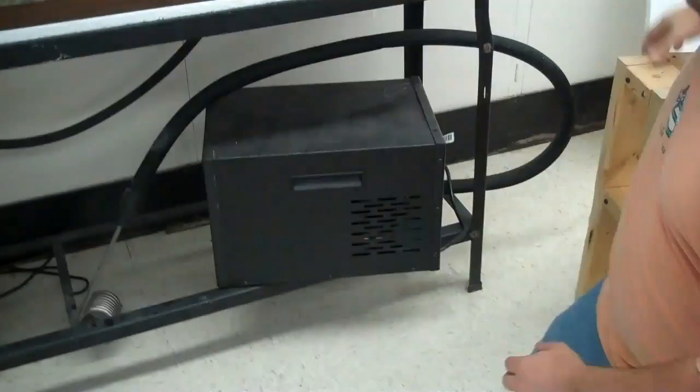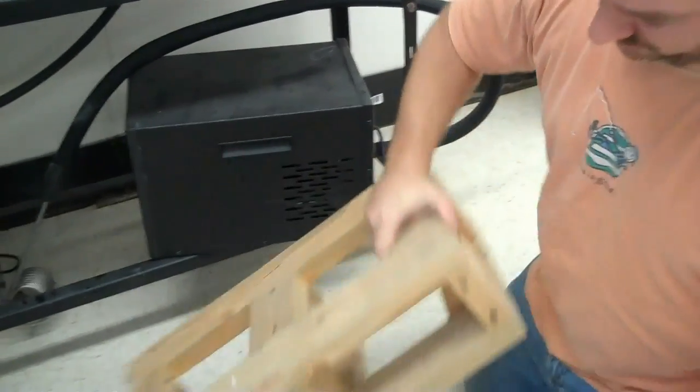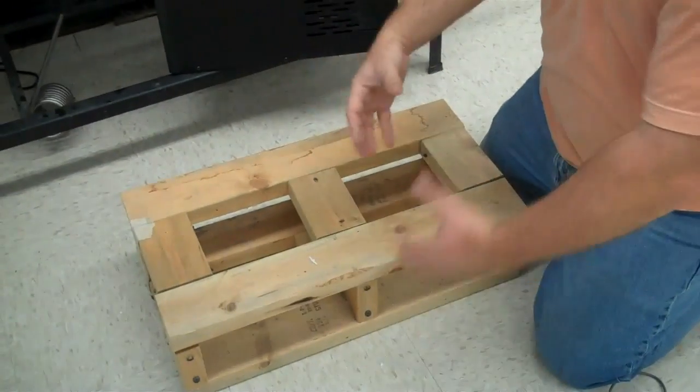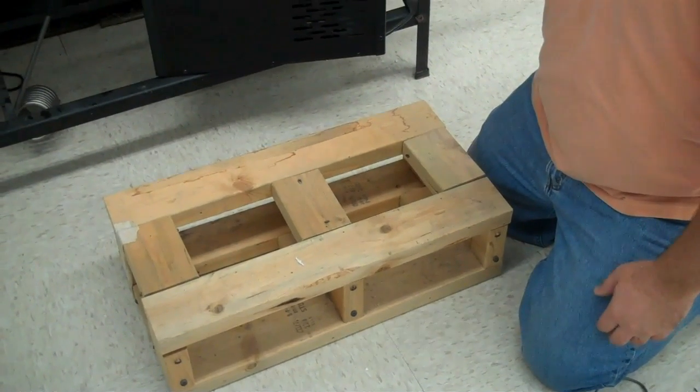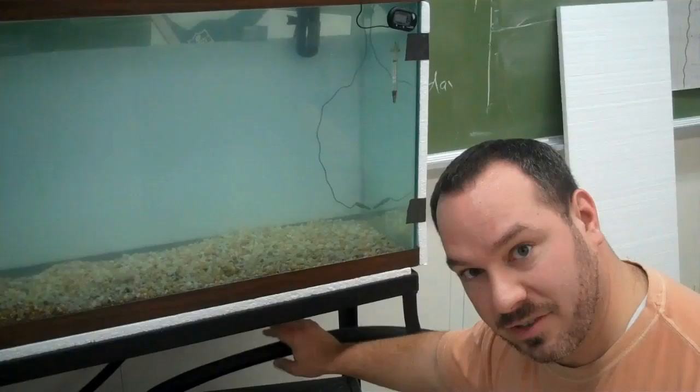Now, the very first thing I have to do to get mine up so it's not at such an angle in the tank, I built this box. Lots of open holes so air can circulate around it, but I built this to get it up a little bit off the ground so the angle is not so bad that it actually breaks this, because this is pretty fragile.